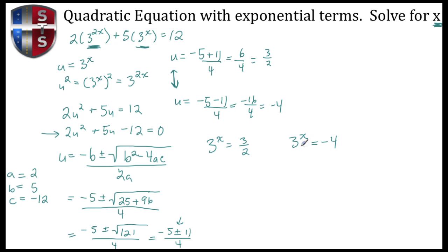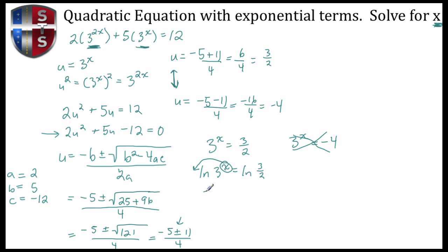Let's focus on the second equation first. We know that for any value we plug in for X, the output of 3 raised to the X is not going to be negative, so we can disregard negative 4 as a solution. For the remaining equation, to get X by itself we take the natural log of both sides: the natural log of 3 raised to the X equals the natural log of 3 halves. By the properties of logarithms, X comes to the front, giving X times the natural log of 3 equals the natural log of 3 halves. Dividing both sides by the natural log of 3, we get X equals the natural log of 3 halves divided by the natural log of 3.